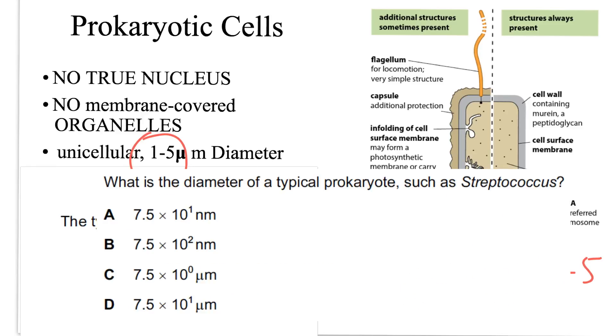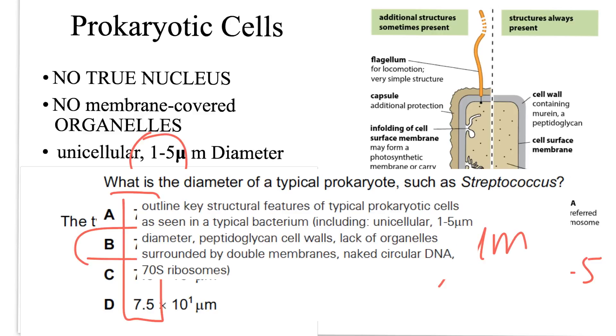Here is another question: What's the diameter of a typical prokaryote such as Streptococcus? Check out the answer options. This question is looking for something close to 1 micrometer or between 1 to 5 micrometers. B would be the correct answer, having 0.75 micrometers. Here is how it appears in the latest syllabus: unicellular, 1 to 5 micrometers in diameter. Cambridge updates itself every year, so you have to keep yourself updated as well.